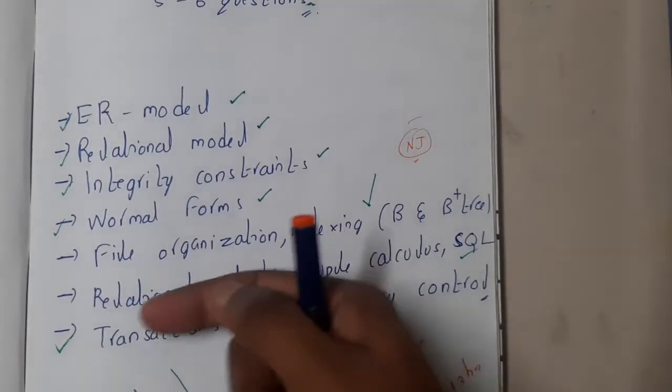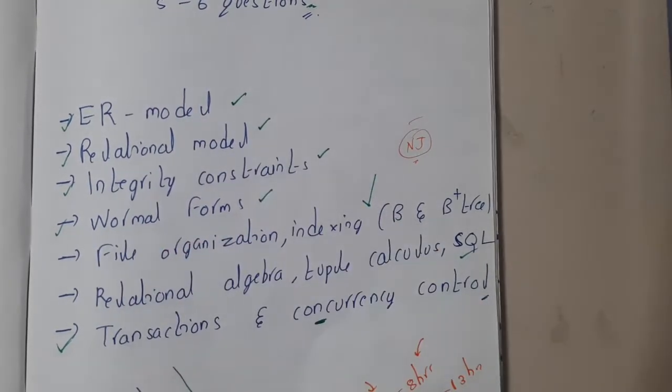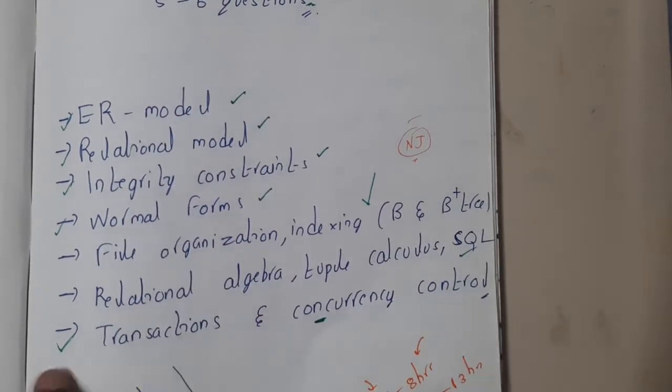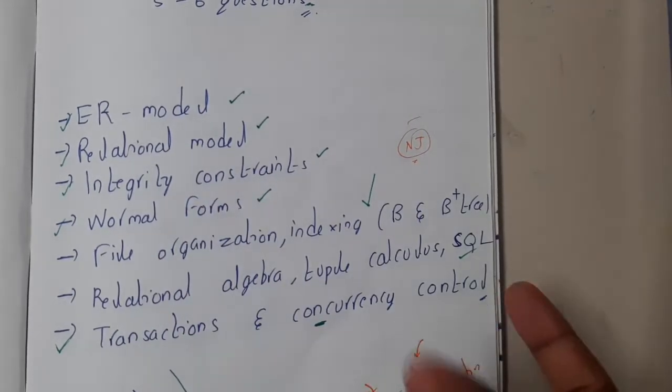If a given query is given, you should understand what they are trying to say. Transactions are really easy. I think we have started with transactions first. Normal forms is a standard thing - if you remember three conditions, you can directly answer them.